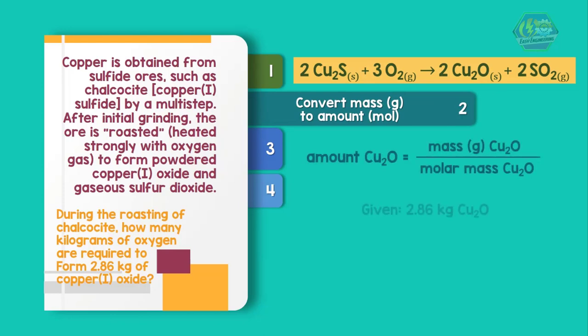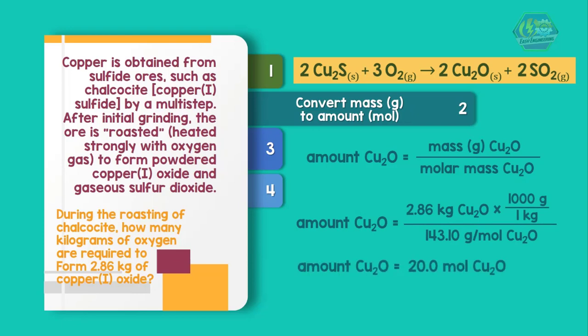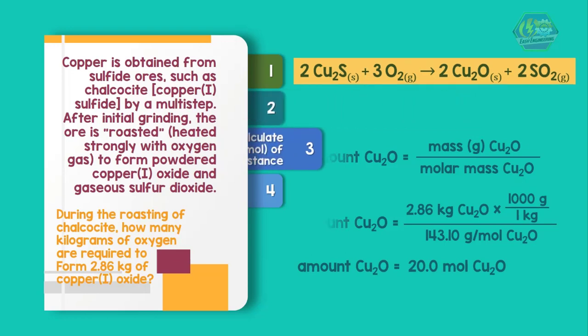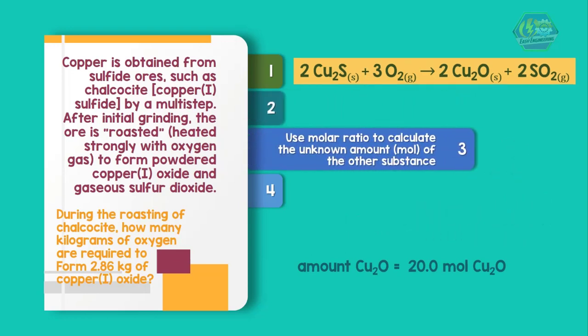We are given 2.86 kilograms Cu2O, which equals 2860 grams Cu2O. The molar mass of Cu2O is 143 grams per mole. So the amount of Cu2O equals 2860 grams divided by 143 grams per mole, which equals 20 moles Cu2O.